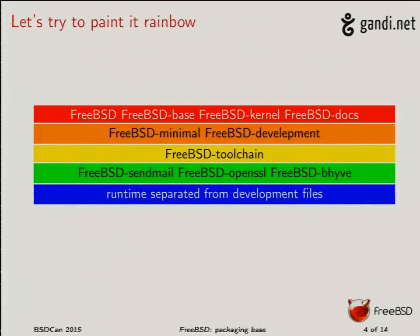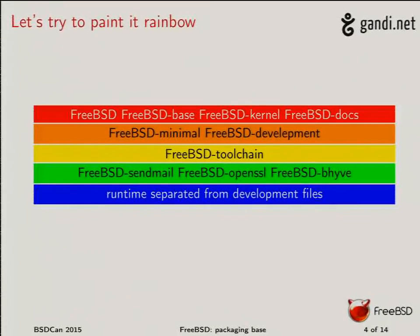We also want to separate the runtime from the development files. I know this is one of the strongest pushbacks from this discussion, because developers say: I have this library, I want to hack on it, I need all the headers. But if you think about it properly, we have a meta package called 'development.' If you're doing development, you just run 'package install development' and you'll have all the headers, all the .a files, all the toolchain as a dependency. People in embedded areas will only have the runtime, which is what they expect.